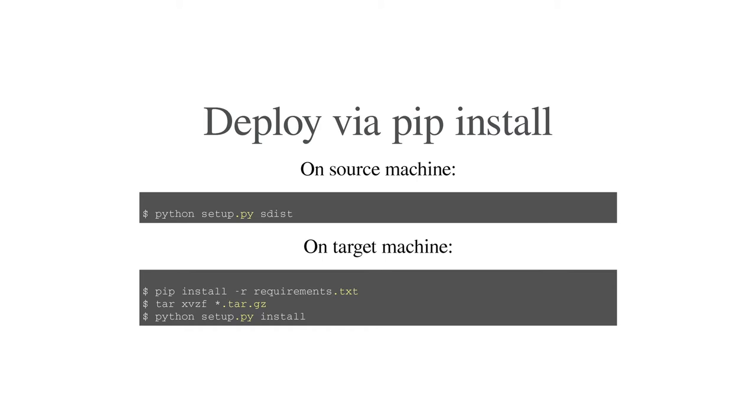I'll talk a little bit about some of the motivation for pants and why we need something like that. Why do we need to build Python? The way people deploy is by pip install — you SD your code, ship it over to some other computer, pip install from requirements, unpack it, and do Python setup install. And it kind of works most of the time if you have a build system and internet and lots of other stuff. So it really doesn't work all that well.